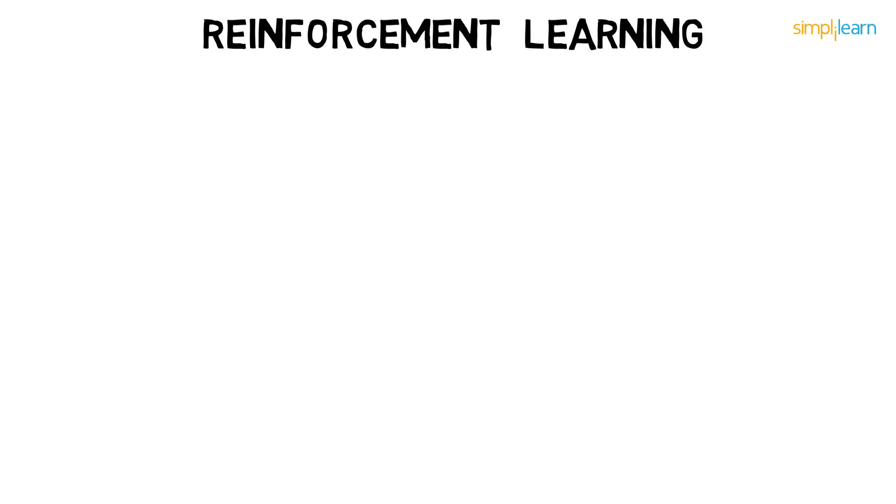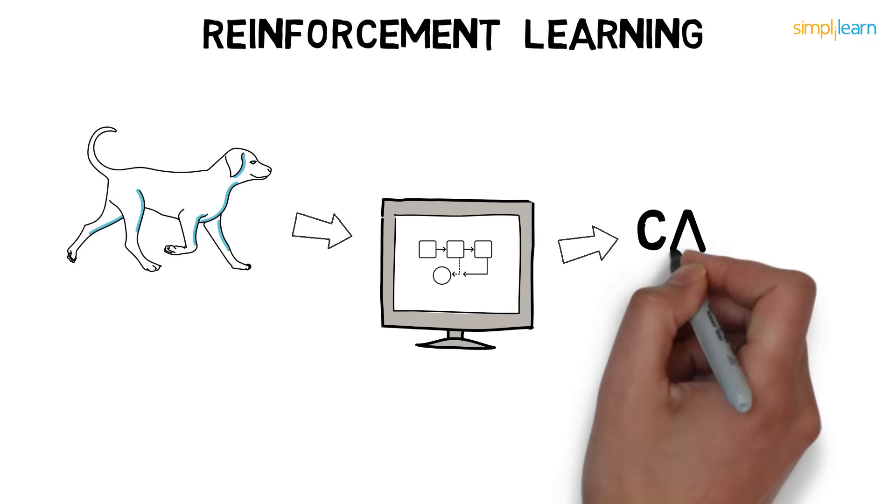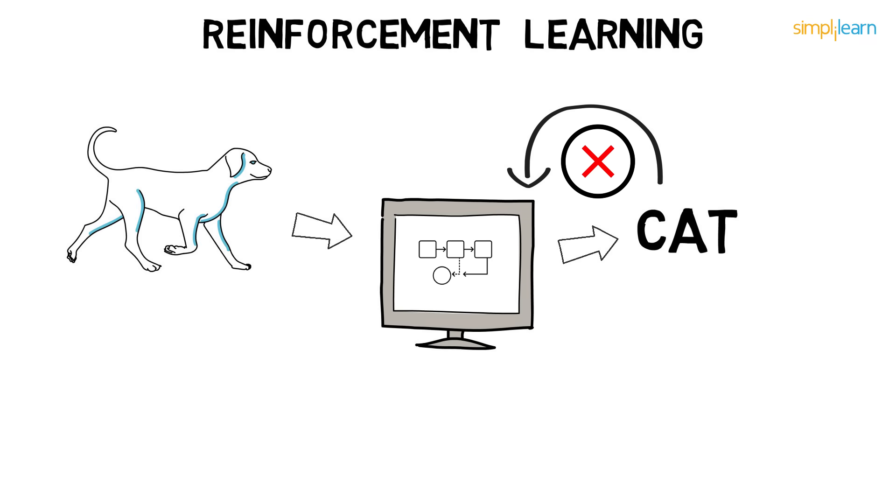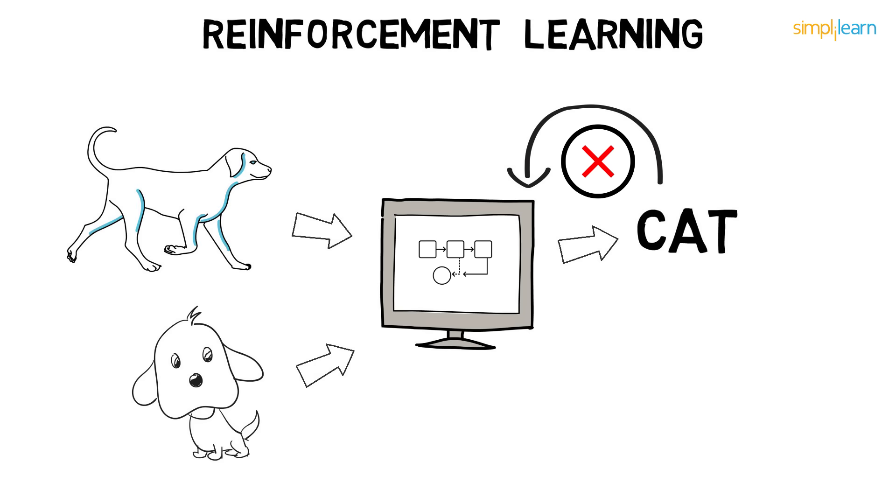Here, let's say you provide the system with an image of a dog and ask it to identify it. The system identifies it as a cat. So you give a negative feedback to the machine, saying that it's a dog's image. The machine will learn from the feedback and finally, if it comes across any other image of a dog, it will be able to classify it correctly. That is reinforcement learning.